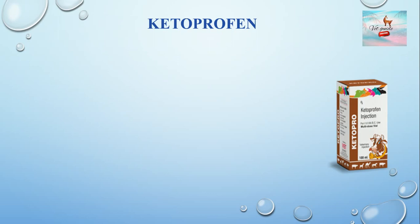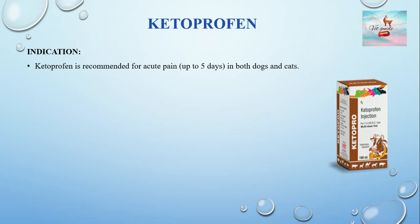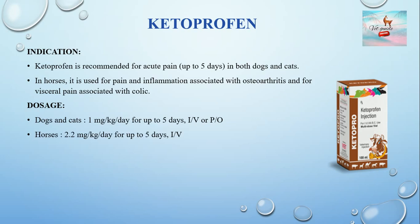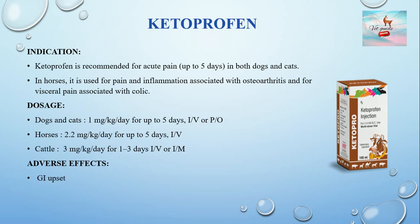Ketoprofen is used for acute pain for up to 5 days in both cats and dogs. In horses, it is used for pain and inflammation associated with osteoarthritis and visceral pain associated with colic. Its dose rate in dogs and cats is 1 mg/kg per day for up to 5 days, intravenously or intramuscularly. In horses, 2.2 mg/kg per day for up to 5 days. In cattle, the dose rate is per kg per day for 1–3 days, intravenously or intramuscularly. Adverse effects include GI upset, hepatopathies, and renal disease.